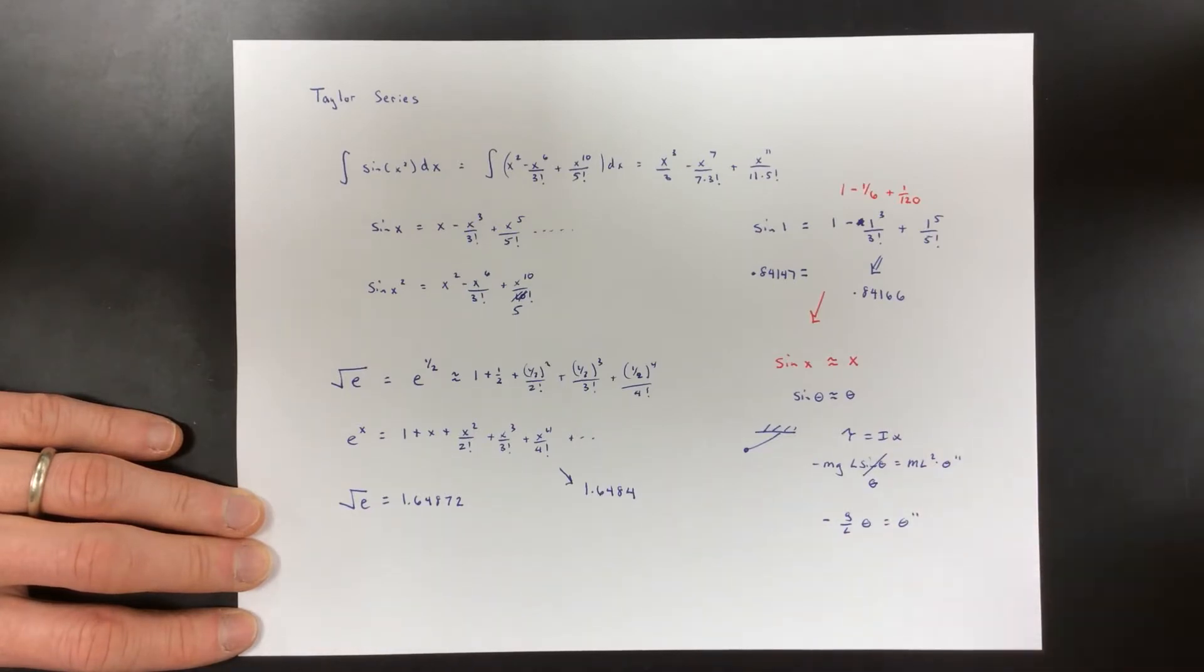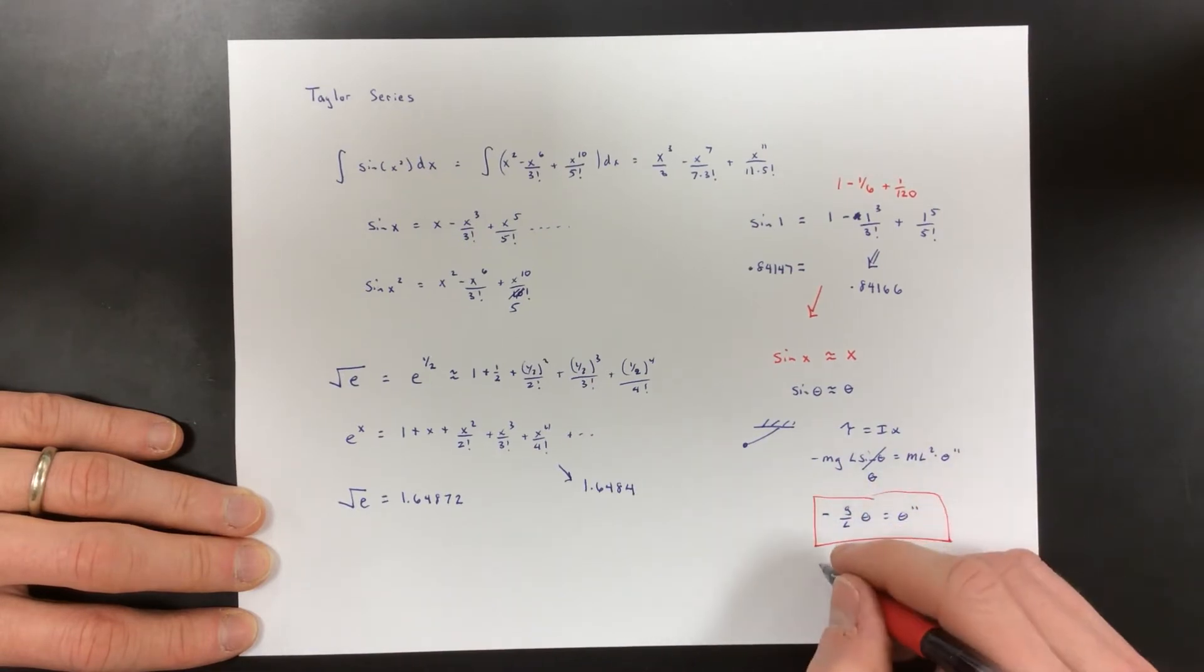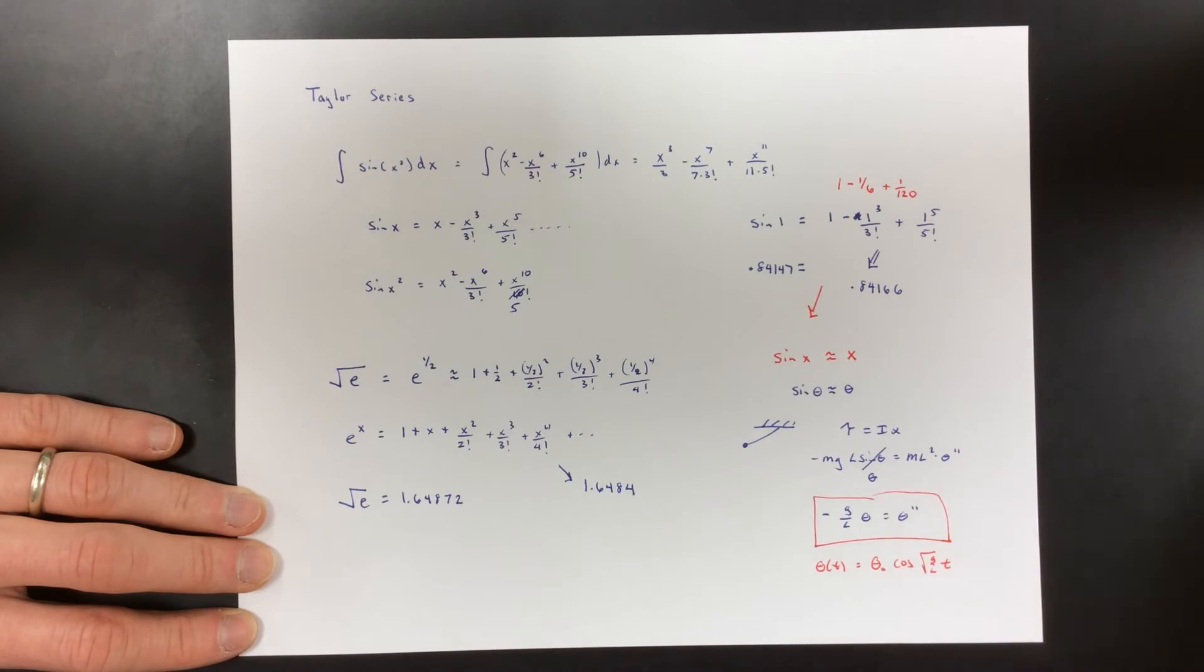But if we take this sine theta and we cross it out and just write it as theta, we get negative g over l theta equals theta double prime. This we can solve.